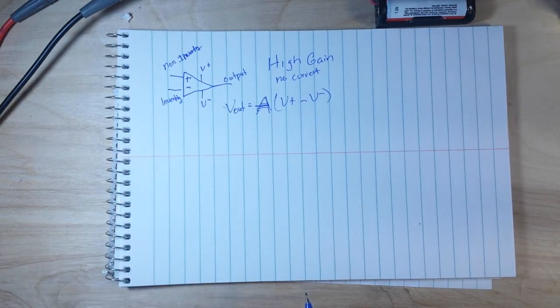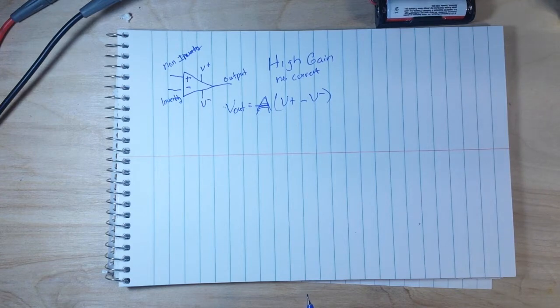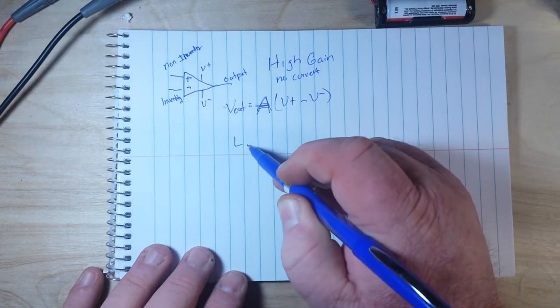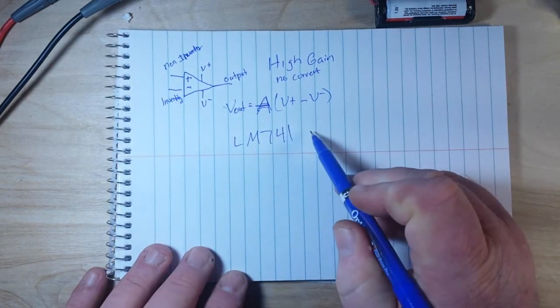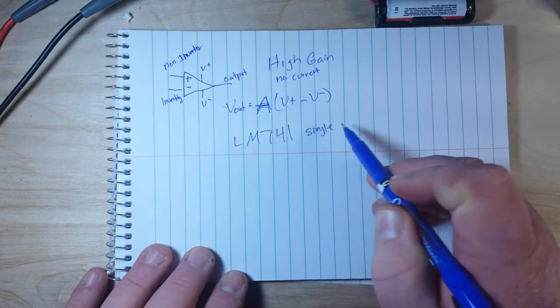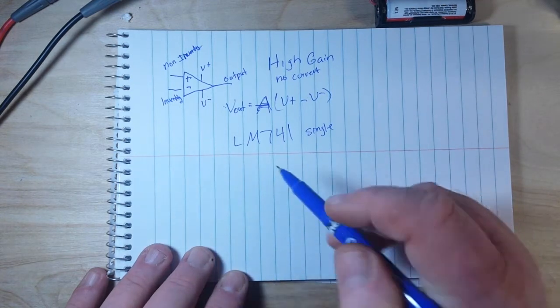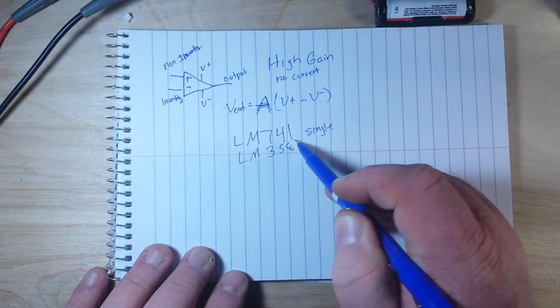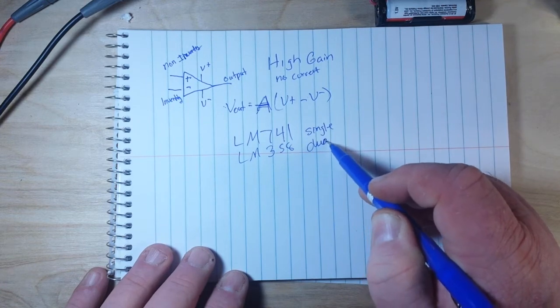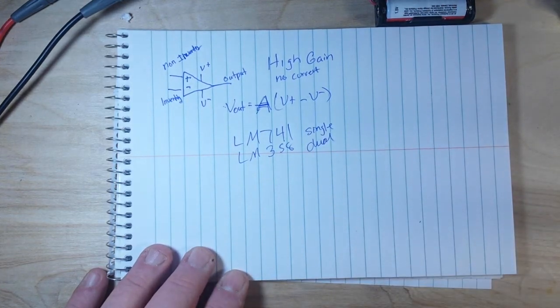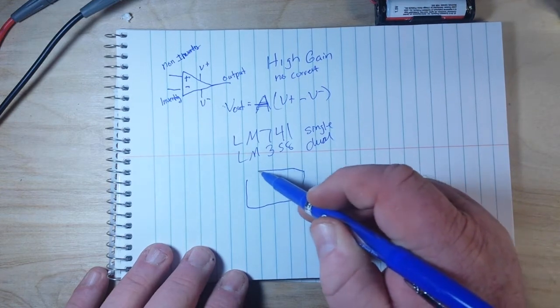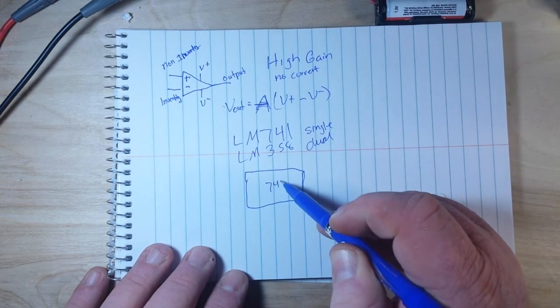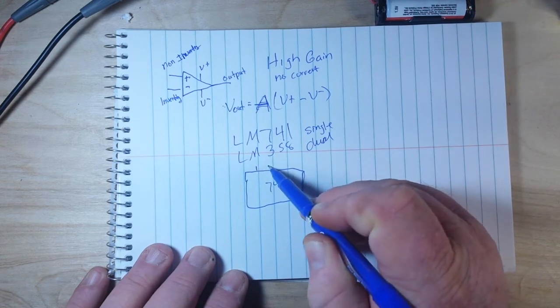Now the op amp that we're going to use today is the LM741. It is a single op amp. Now there are others, there is the LM358 which is a dual op amp. Now if we look at that, the pinout for the 741 has eight pins.